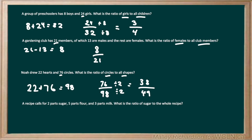Moving on to our final question, we have a recipe that calls for 2 parts sugar, 5 parts flour, and 3 parts milk. We need to find the ratio of sugar to the whole recipe. We know the part of sugar is 2, but now we need to find the whole recipe by adding all parts: 2 parts sugar plus 5 parts flour plus 3 parts milk. 2 plus 5 plus 3 gives us 10, so 10 is going to be our whole.